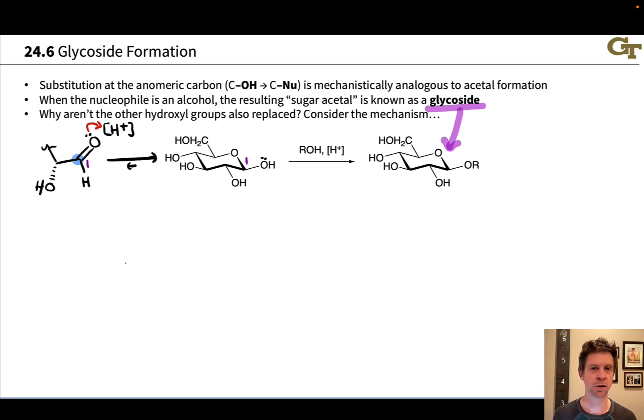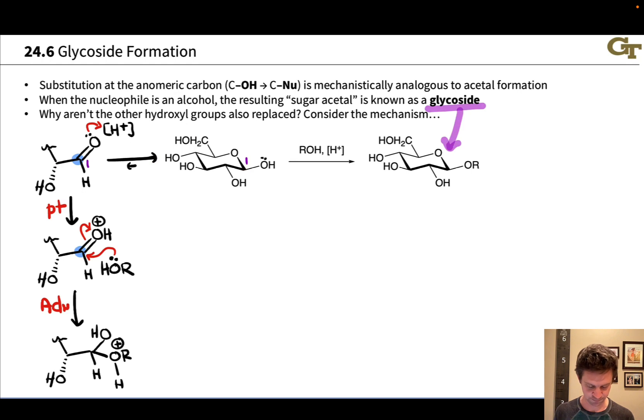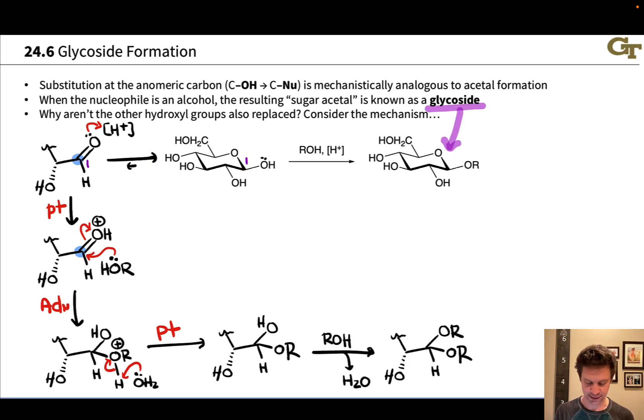That aldehyde could hypothetically form an acetal with something like methanol or ethanol when the sugar was placed in solution. The basic mechanism here under acidic conditions would involve protonation of the carbonyl oxygen, followed by nucleophilic attack by the alcohol, nucleophilic addition, a proton transfer to neutralize the product. And we have a neutral hemiacetal here. Then we could protonate the OH, lose water and add a second equivalent of alcohol to get to the acetal.